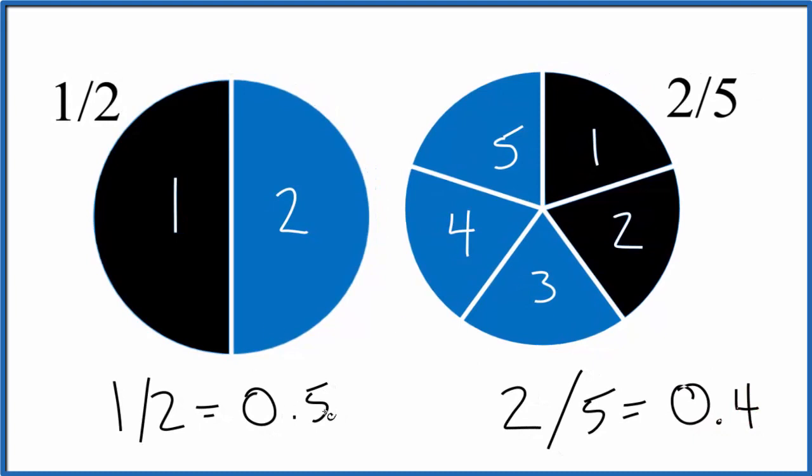Again, we see that 0.5 is bigger than 0.4, so one half is larger than two-fifths. Either way, we could look at it visually like this or we could use decimals to figure out that one half is greater than two-fifths.